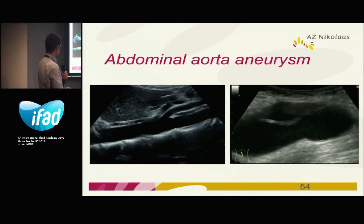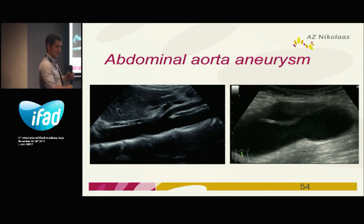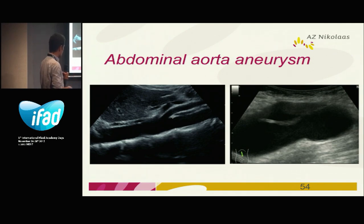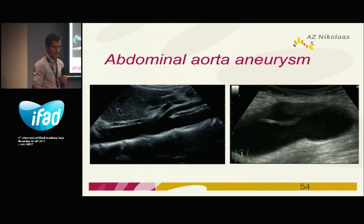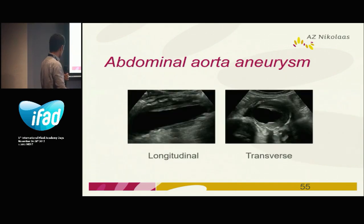Abdominal aneurysm. This is the normal aorta — this is the liver, and you can look at it. It's very superficial, so you can appreciate the whole aorta. If it's dilated, it's very easy — then it's an aneurysm, and you can measure it. Sometimes you have a true lumen and a false lumen — this is very easy to see.